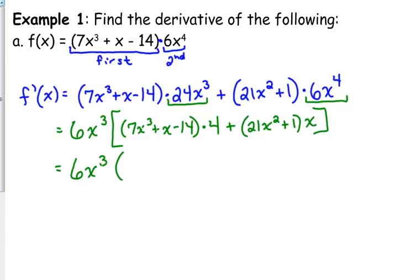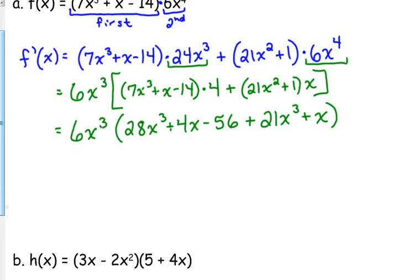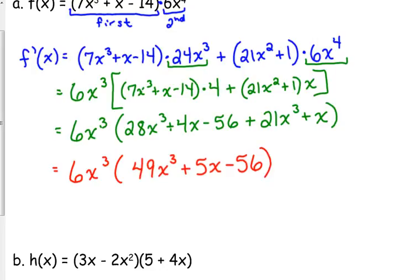I'm going to drop the brackets. If I distribute the 4, I get 28x cubed plus 4x minus 56. And when I distribute the x, I get plus 21x cubed plus x. Then it's just a matter of combining like terms: 6x cubed times 28x cubed plus 21x cubed is 49x cubed plus 5x minus 56. That is our final answer for the derivative.